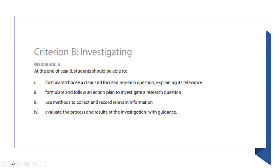How you're going to create the brochure and what is required will be discussed later. I'll touch upon briefly what each criterion includes. For this unit, you'll only be assessed on criterion B and C. B stands for investigating. You'll be assessed on the following strands: formulate and choose a clear and focused research question explaining its relevance. When you create a research question as a title for your brochure, you must answer it at the end of your conclusion. Formulate and follow an action plan to investigate a research question, including your process of research, resources used, and how you created your brochure.